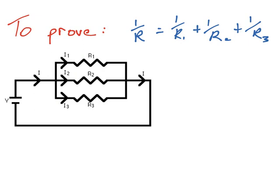So we begin our proof by writing down that the current flowing in, I, is equal to the three currents flowing out of that junction: I1 plus I2 plus I3.